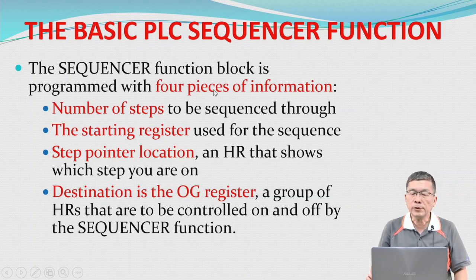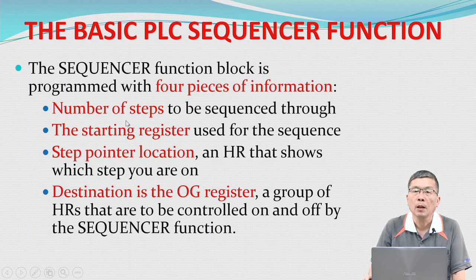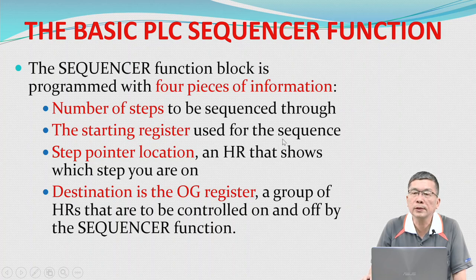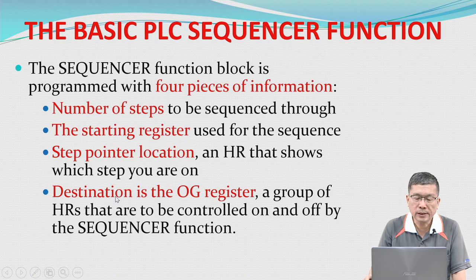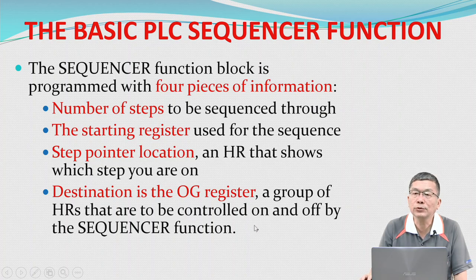The sequence function block is programmed with four pieces of information: number of steps to be sequenced through; the starting register used for the sequence; step pointer location and holding register that shows which step you are on; and destination — the output group register, which is a group of holding registers controlled on and off by the sequencer function.